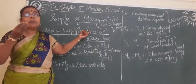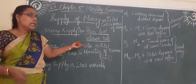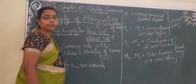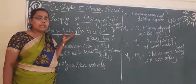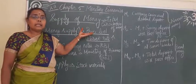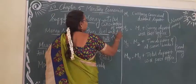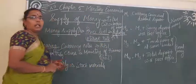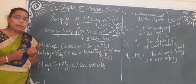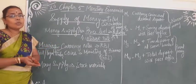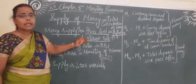If money supply is more, there will be an increase in the price level, which leads to inflation. So to control inflation, the commercial banks increase the interest rate, which attracts people to deposit money in the bank, and that helps control the supply of money or the circulation of money. So money supply plays a vital role in the price level and also the interest rate.